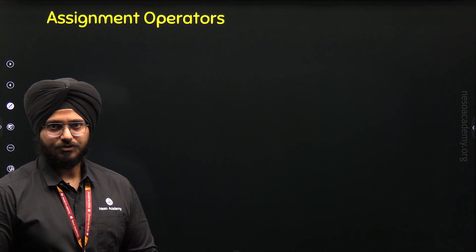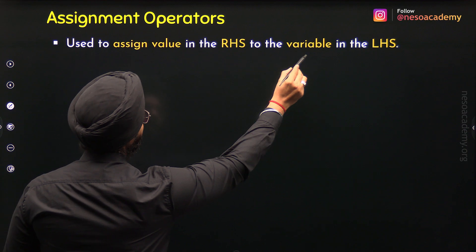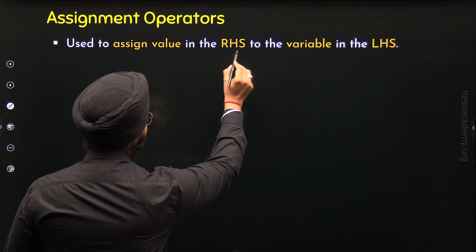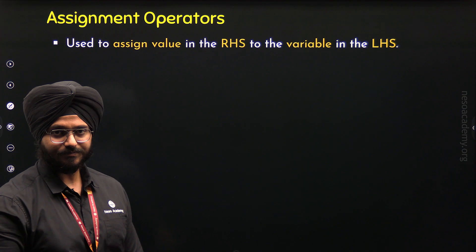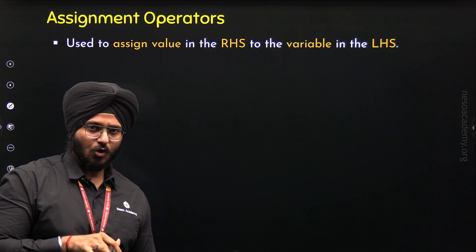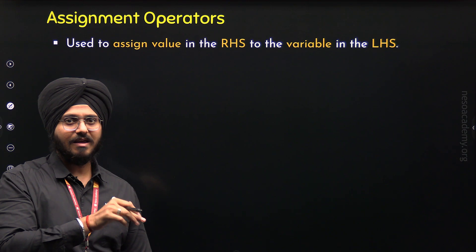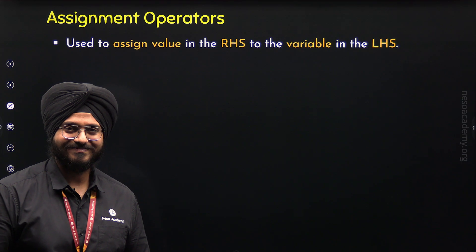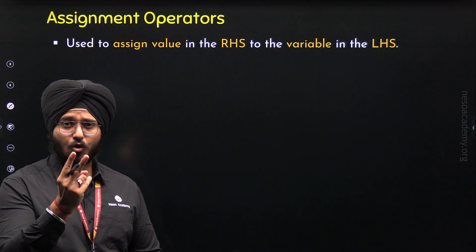So what are assignment operators? Assignment operators are those operators that are used to assign the value in the RHS to the variable in the LHS. We already know about the simple assignment operator, represented by a single equal sign, which assigns the value on the right-hand side to the variable on the left-hand side. But it is not the only assignment operator in C++. We have more, and we call them compound assignment operators because they are formed from two operators, not one.